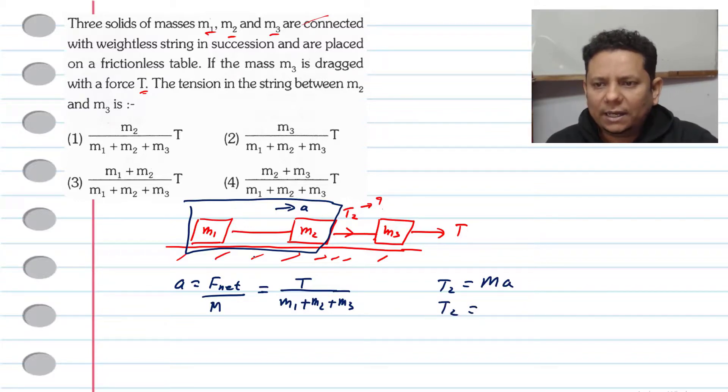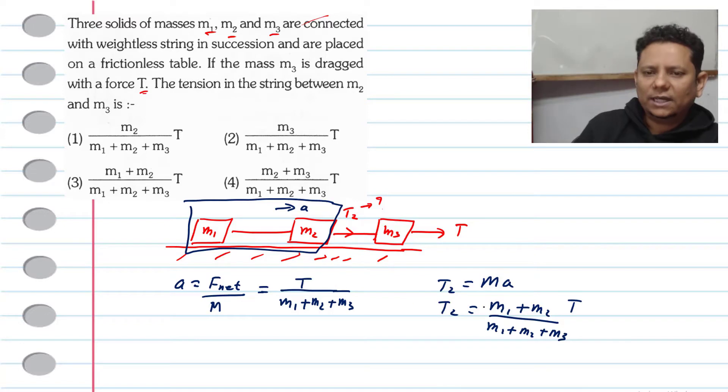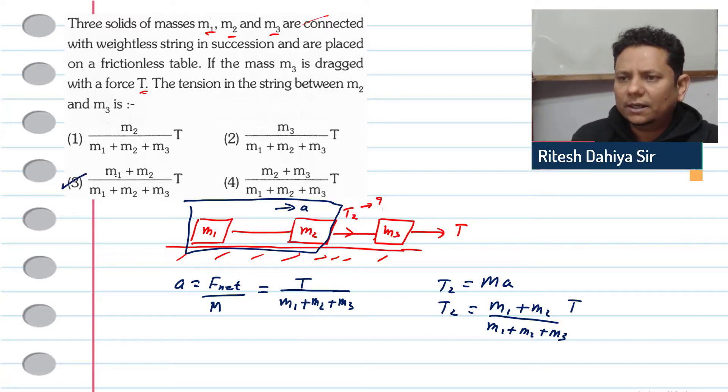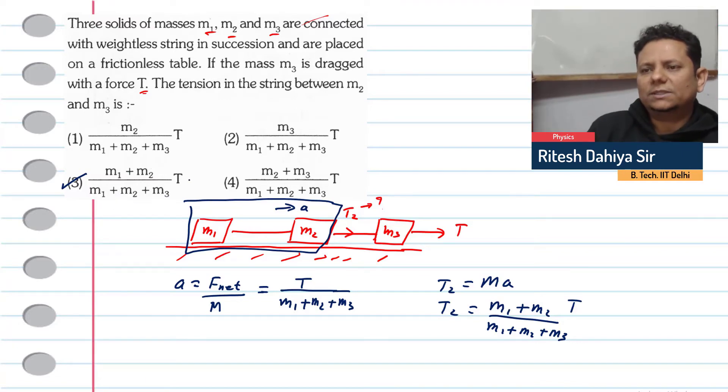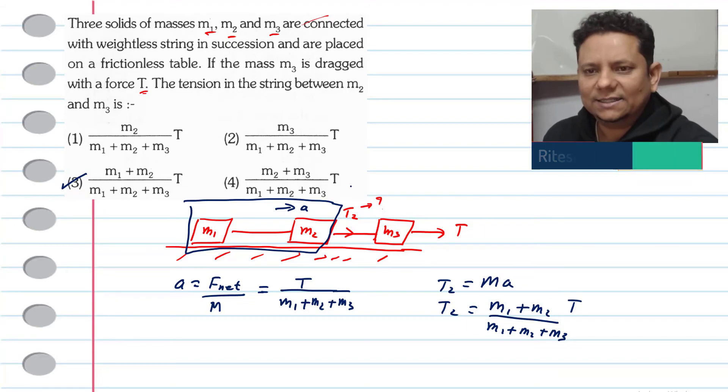So, T2's value is mass, which will be equal to M1 plus M2, and this will be equal to T divided by M1 plus M2 plus M3. So, this will be our final answer. Based on this, we can say that option number 3, M1 plus M2 divided by M1 plus M2 plus M3 into T, this will be our final right answer.